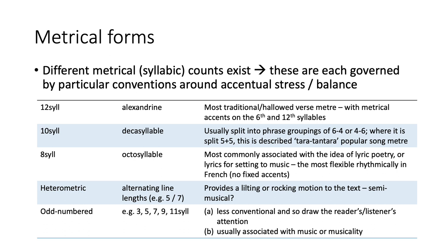Typically in the Alexandrine line, because it's quite long, there's usually a break halfway through — a gentle metrical accent on the sixth syllable, not a big lump, but a little pause or marker at the halfway point. We've also got the décasyllable, which has a slightly more flexible grouping, usually in sixes and fours. There is also a version that splits five and five, known as the 'taratantara' rhythm, which gives a popular song meter and is used for that quite often.